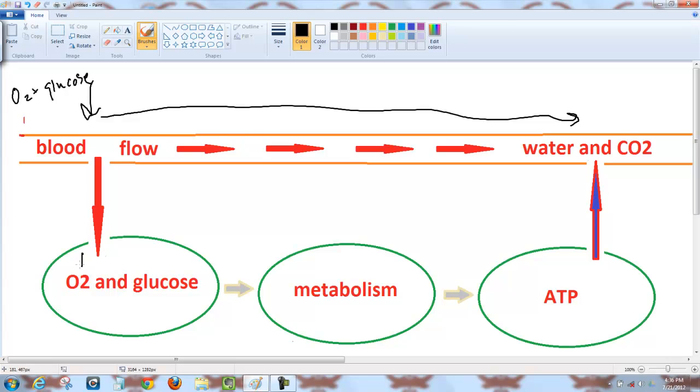The O2 and glucose are being dropped off at individual cells. Every cell needs O2 and glucose to survive, to live. They will take this O2 and glucose, and through a process called metabolism, they will turn it into ATP, water (which is also H2O), and CO2 (called carbon dioxide). This is going on in every cell of your body throughout your life.